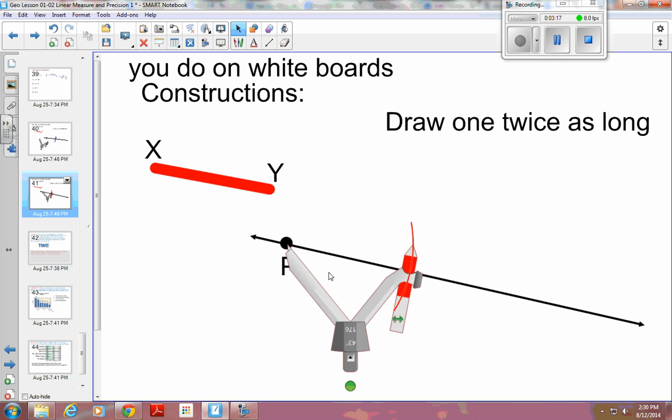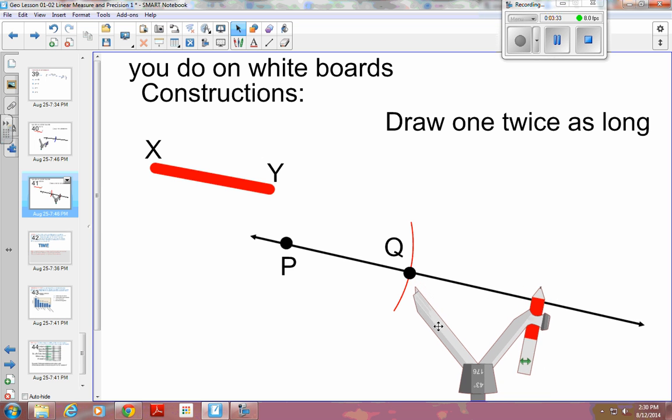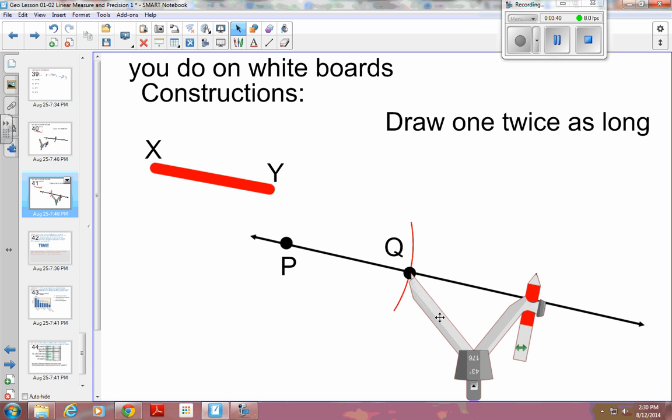And since I want to make it twice as long, I can then take at the intersection, which, there's my intersection, and we can call that Q still. Put my compass at the intersection here, right at the intersection, I can then make another arc.